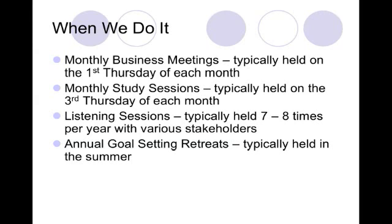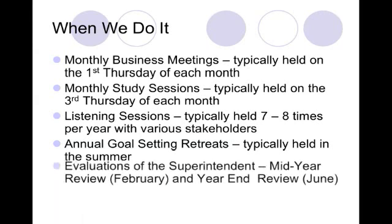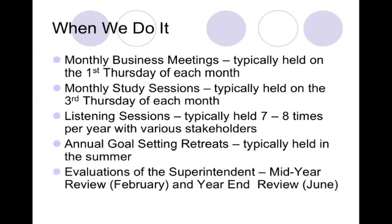The board is also involved in the evaluations of the superintendent at several different times of the year. First, there is a mid-year evaluation held in February, involving several meetings to discuss where we are during the year and where the superintendent is in meeting the school board's goals. Then there is also a year-end review process, typically held over several meetings in June, allowing the board to reflect on the school year and the superintendent's performance during that year.